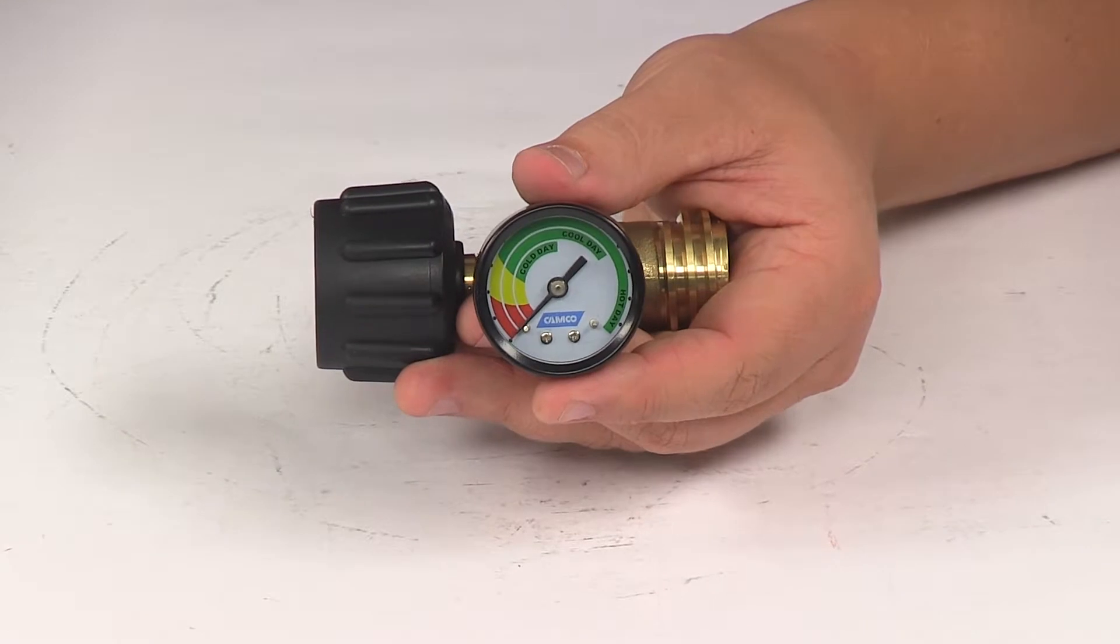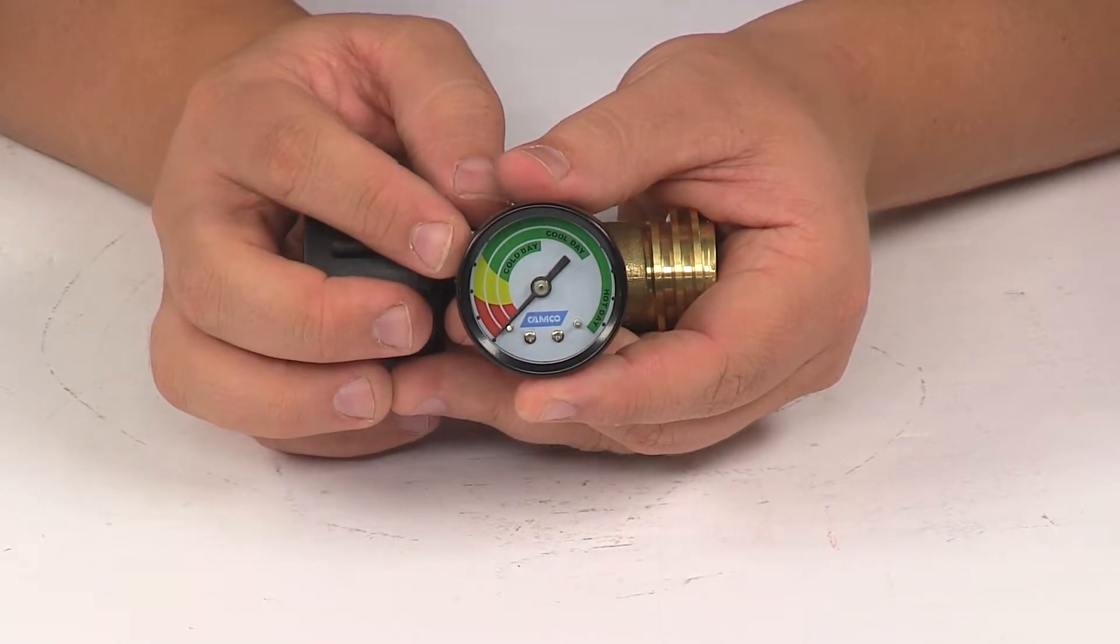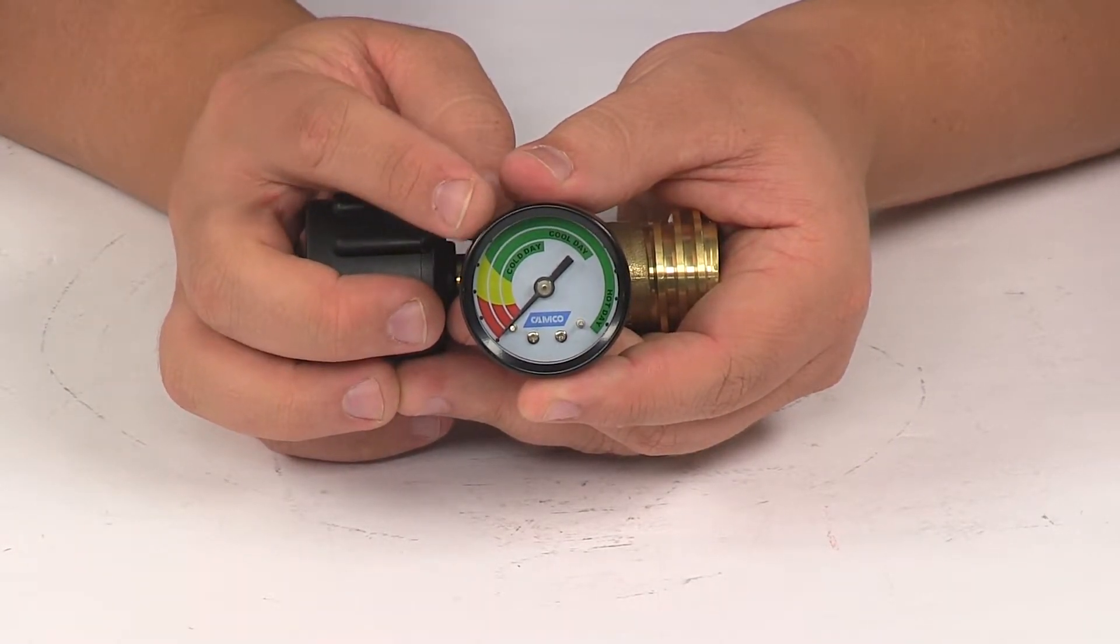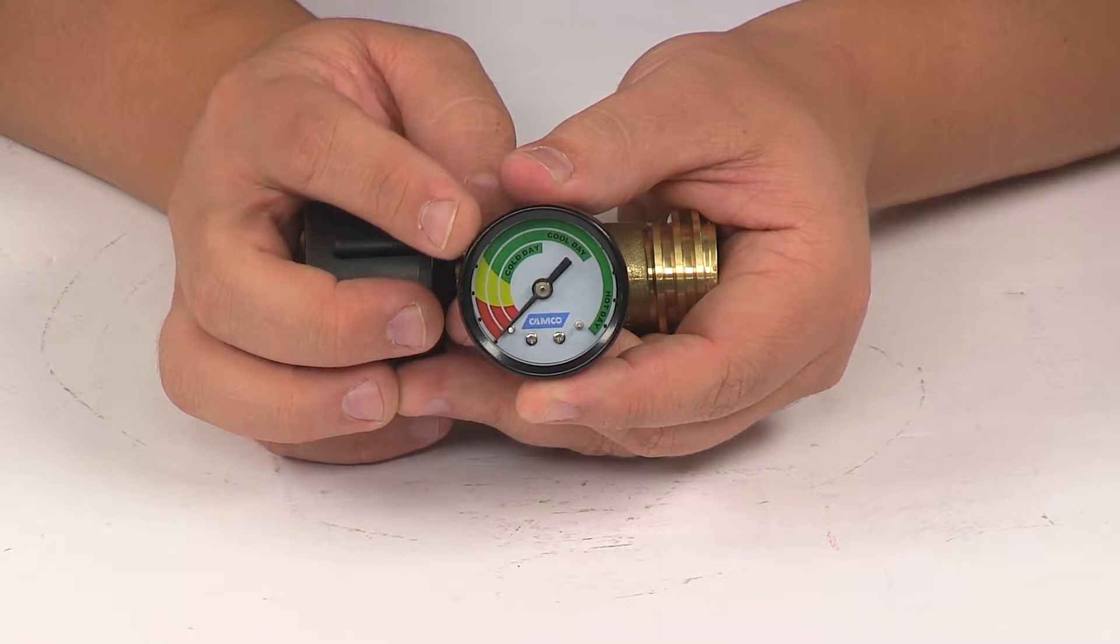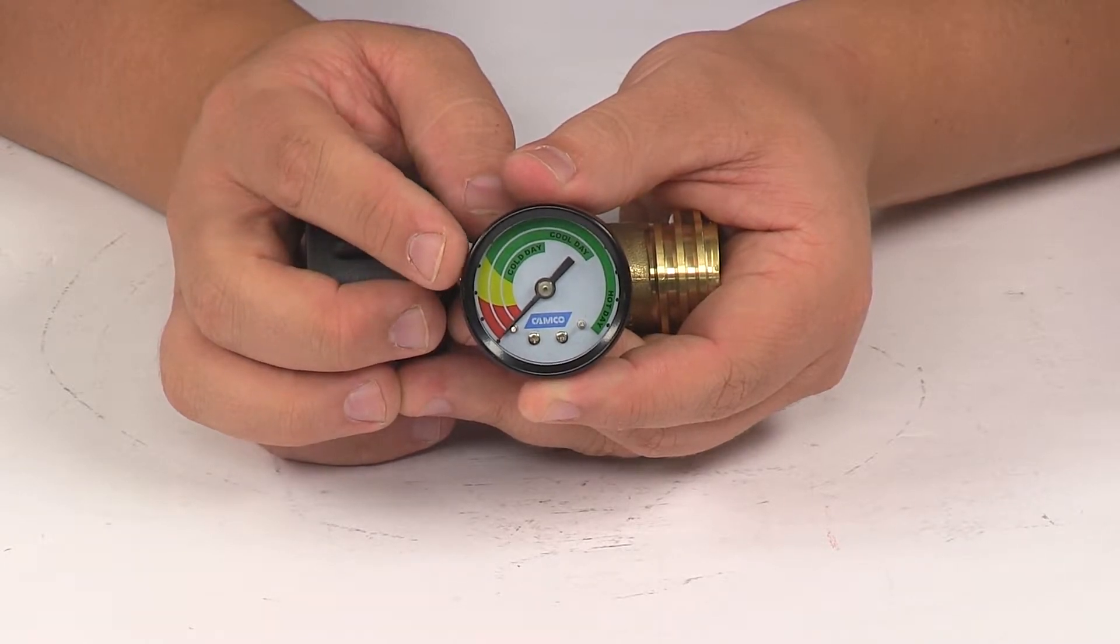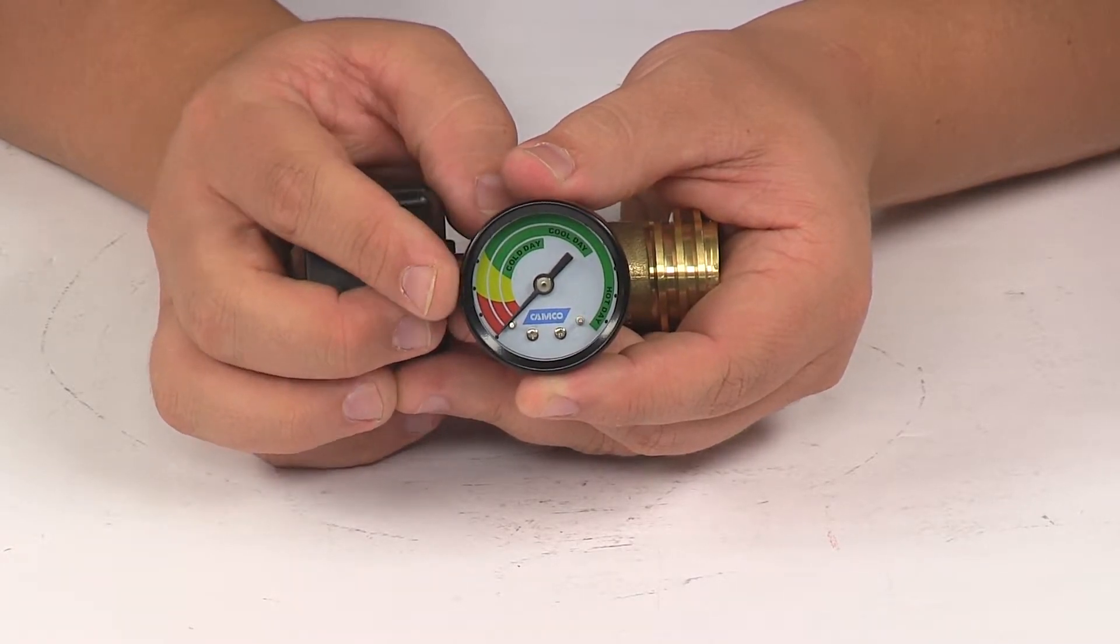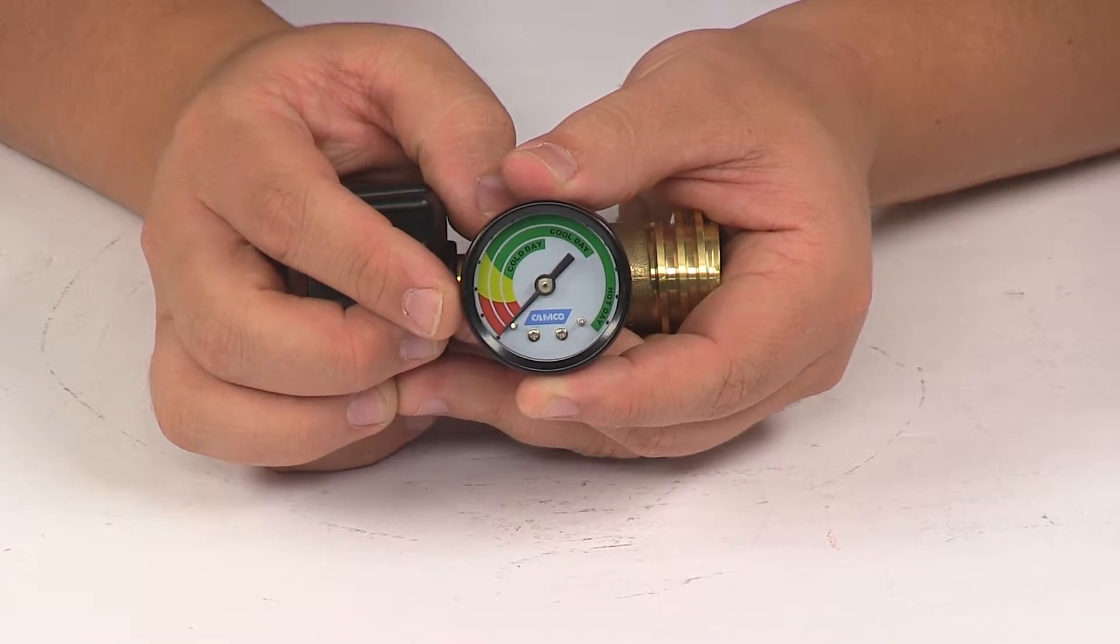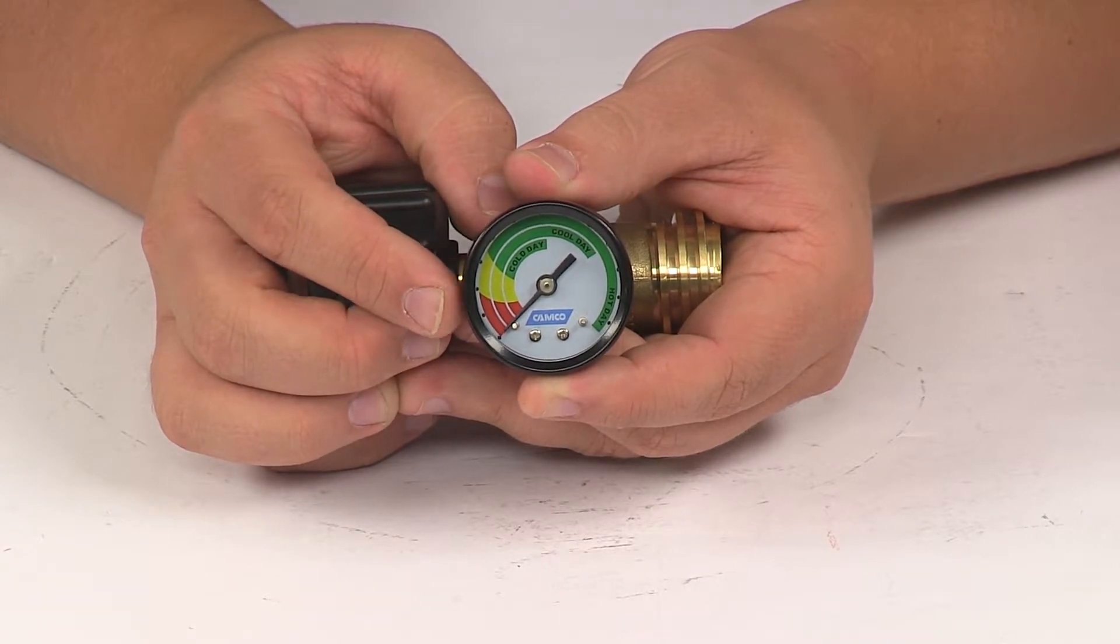Now on the dial, you're going to notice three different colors. You're going to have the green area, which means that you have a good amount of propane in your cylinder. You're going to have the yellow area. That means that you're approaching low levels. And you're going to have the red area. That means that your cylinder should probably be refilled.